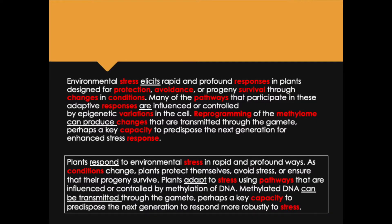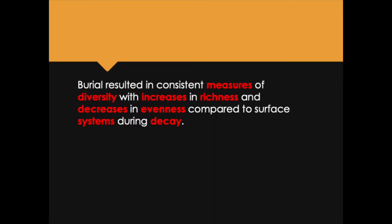I didn't remove all of the abstract nouns — some are still in place, highlighted in red. The goal is not to get rid of every single abstract noun; it's to get rid of excessive abstraction. Let's look at another example: 'Burial resulted in consistent measures of diversity with increases in richness and decreases in evenness compared to surface systems during decay.' Whenever you see 'increases in X' or 'decreases in Y,' you can change that to 'X increased, Y decreased' — one fewer word and an agent with an active verb. 'Increases' is an abstract noun; why not change it to an active verb?